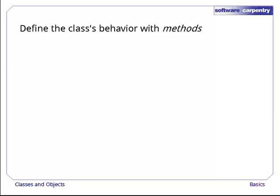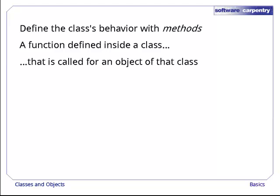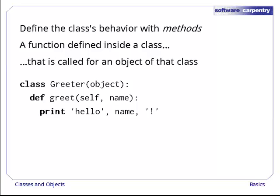To do this, we define one or more methods inside the class. A method is just a function that's defined inside a class that can then be called to get an object of that class to do something. For example, here's a simple class called greeter that has one method called greet.